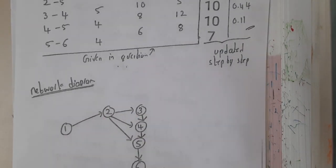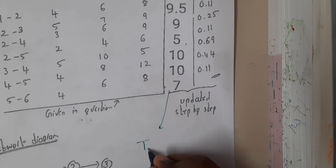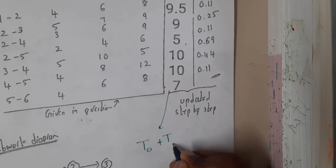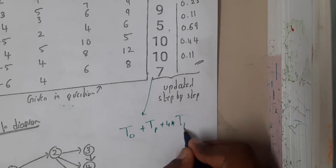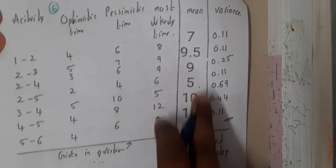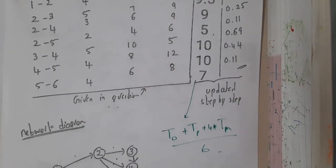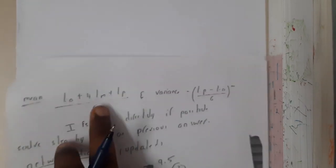Once activity diagram is done, you will be calculating the mean. The formula for mean is optimistic time plus pessimistic time plus 4 into most likely time, divided by 6. Using this formula you will be solving it and you will be getting these mean values. These mean values are the values which are here, the costs or the time taken for a particular process.